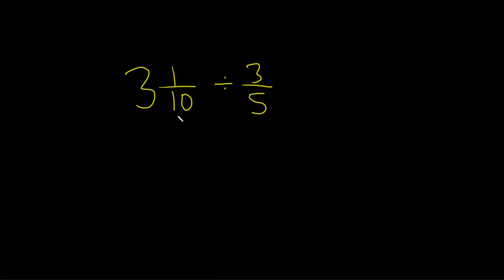To do that, we do the following. We do 10 times 3, which is 30, and then we add the 1. So here we multiply, and here we add. So 10 times 3 is 30, 30 plus 1 is 31. So this is 31 over 10.